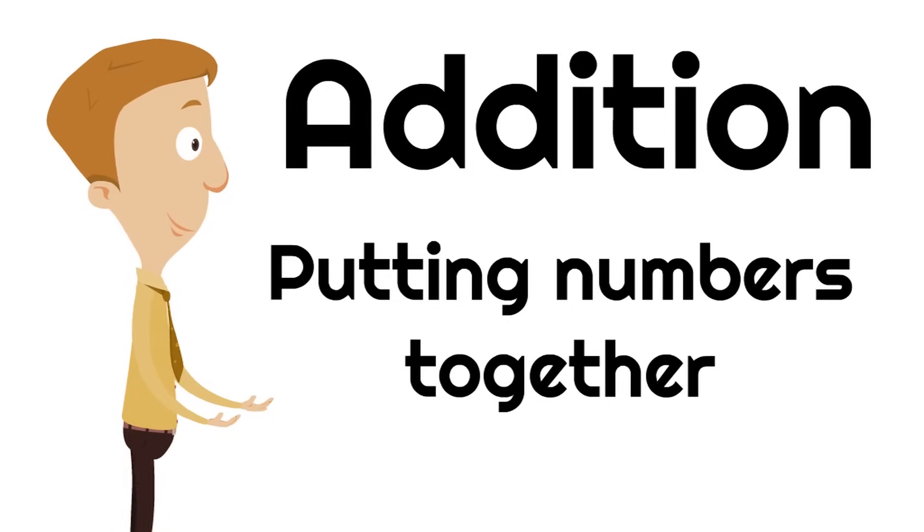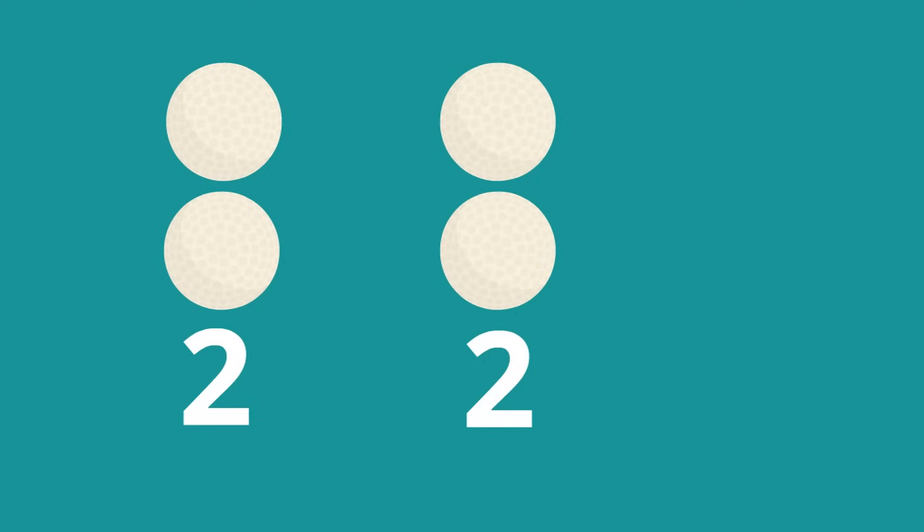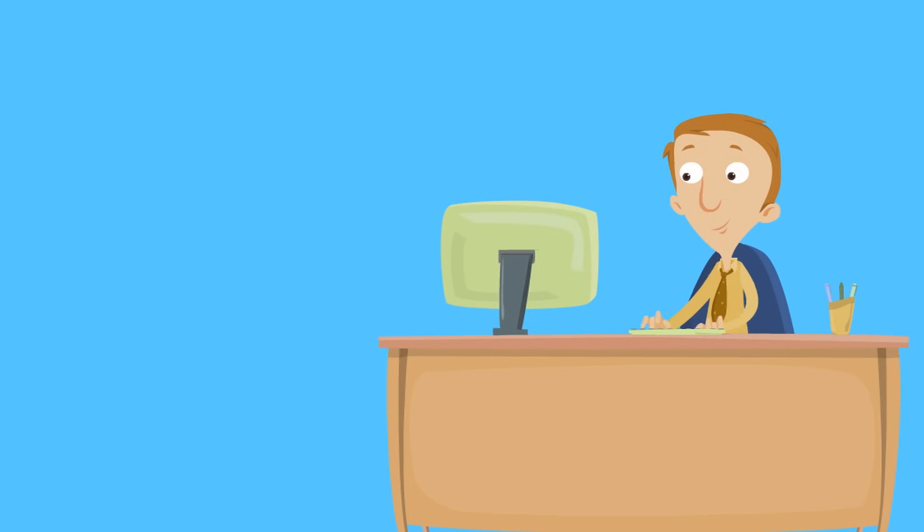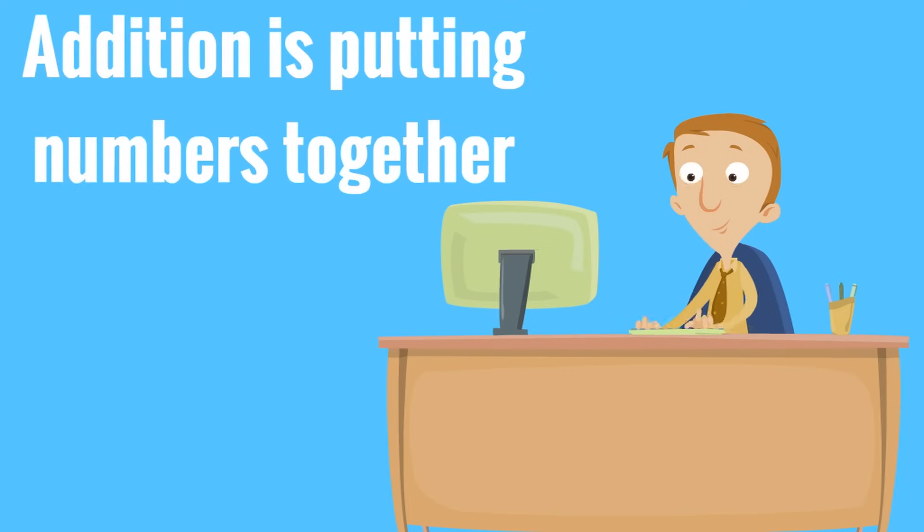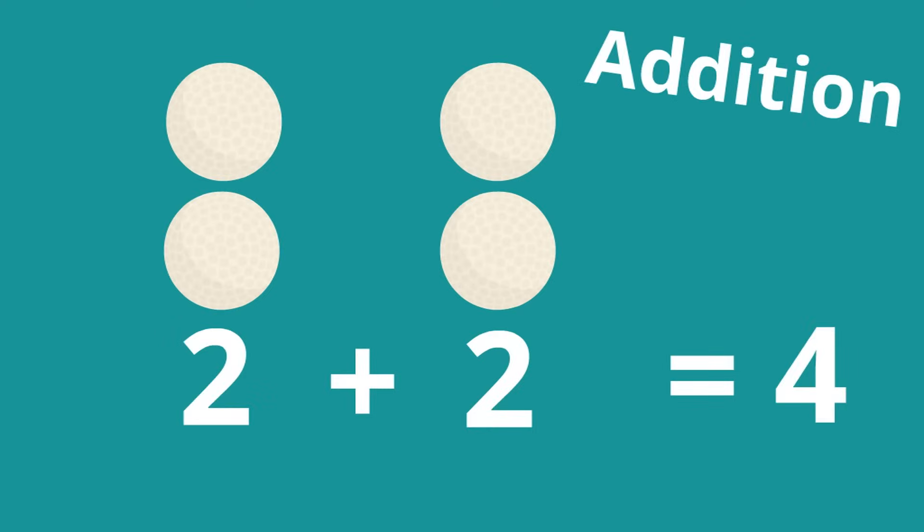So she had two balls, and she's found two new ones. So we need to find out what two plus two is. What a great addition problem. What's two plus two? If you don't know, you can actually just count the golf balls. What's two plus two? Two plus two equals four. Remember, addition is putting numbers together. Two plus two equals four. That's addition! Putting numbers together.